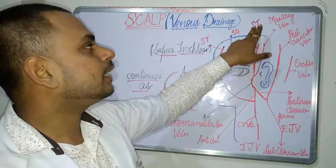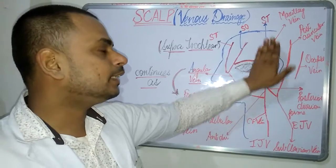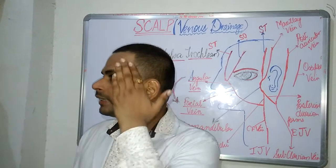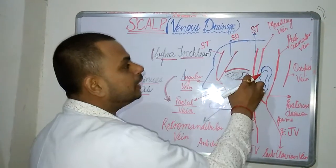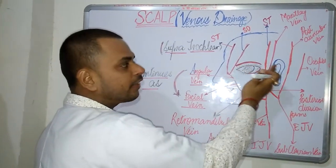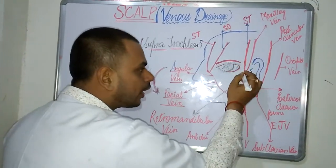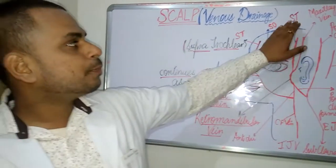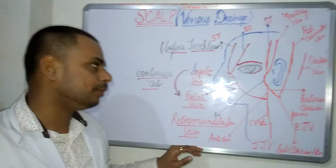Moving on to the next thing — that is the superficial temporal. This region refers to the temporal region. The superficial temporal and the maxillary vein, lying just in front of the ear, join to form the retromandibular vein.